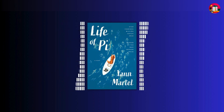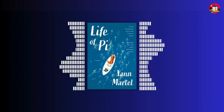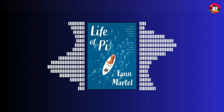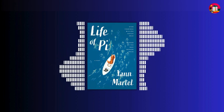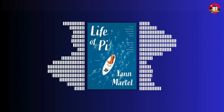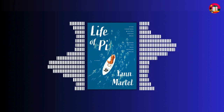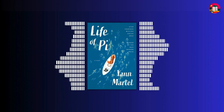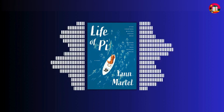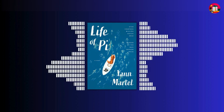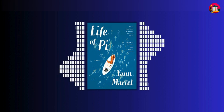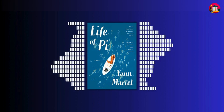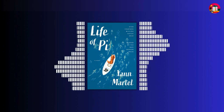In order to survive, Pi establishes a fragile truce with the tiger, using his knowledge of animal behavior and psychology to assert dominance. Days turn into weeks, and weeks turn into months, as Pi and Richard Parker drift across the vast expanse of the Pacific Ocean.